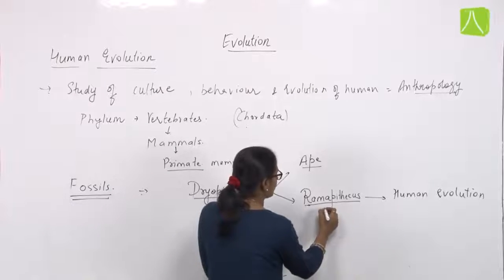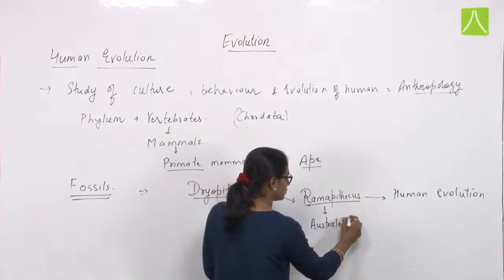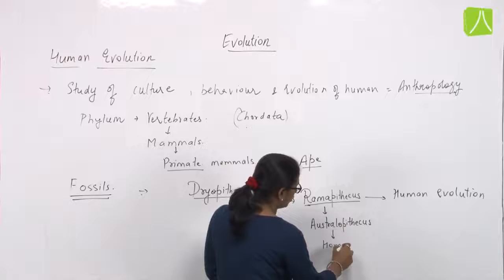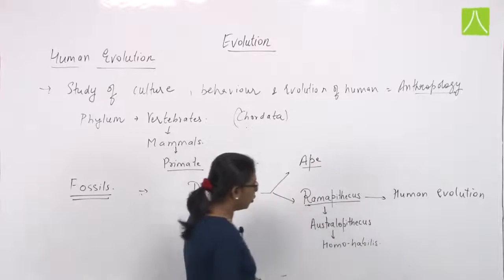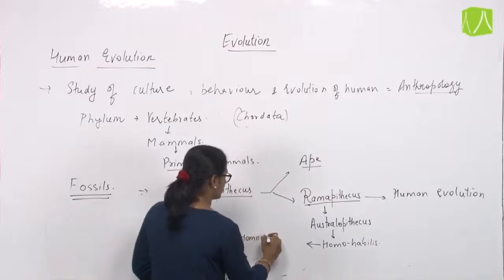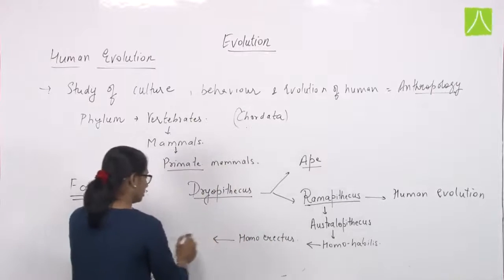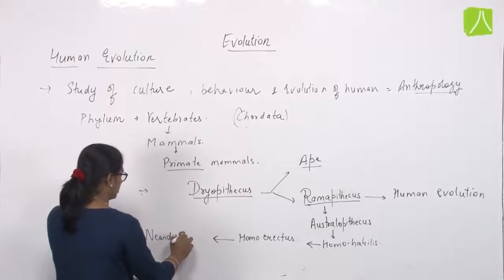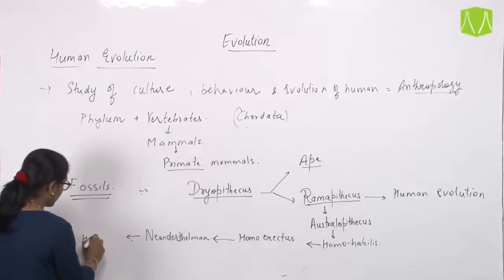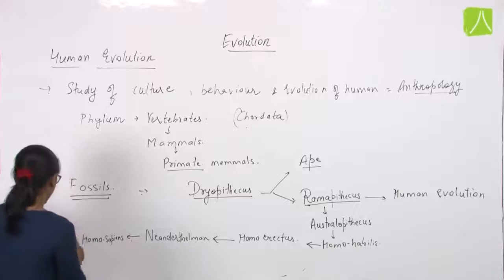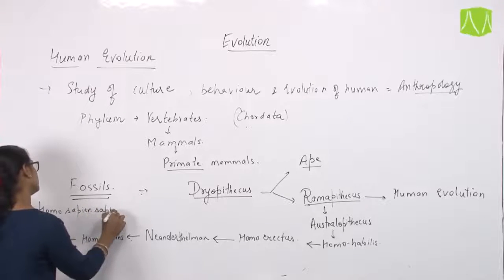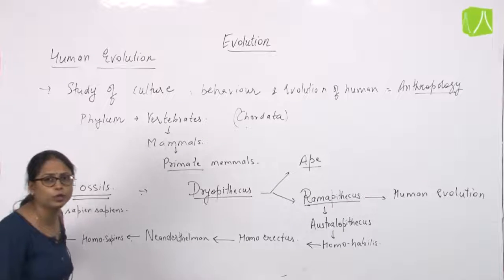After Ramapithecus comes Australopithecus, then Homo habilis, then Homo erectus, then Neanderthal man — also known as Cro-Magnon — then Homo sapien, and finally Homo sapiens sapiens. These are the different stages of human evolution.